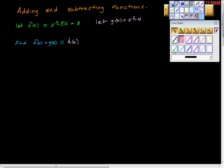The first thing we're going to do is take f of x, and it says clearly here that f of x is this. So x squared minus 5x plus 8. Let this plus sign right here be this plus sign right here. And then we're going to add it to g of x, and it says clearly that g of x is x squared minus 4. So we're going to add x squared minus 4.